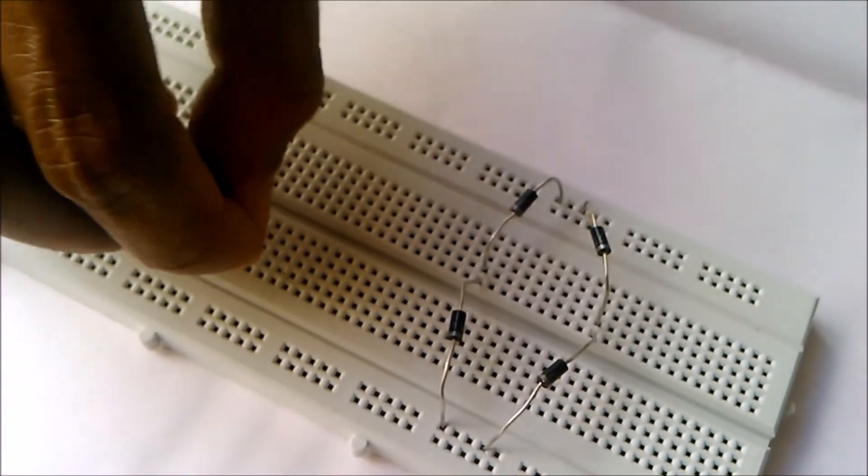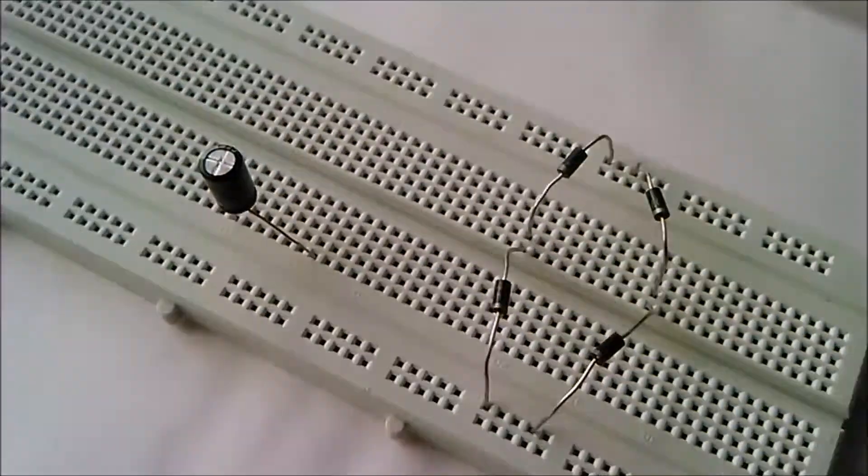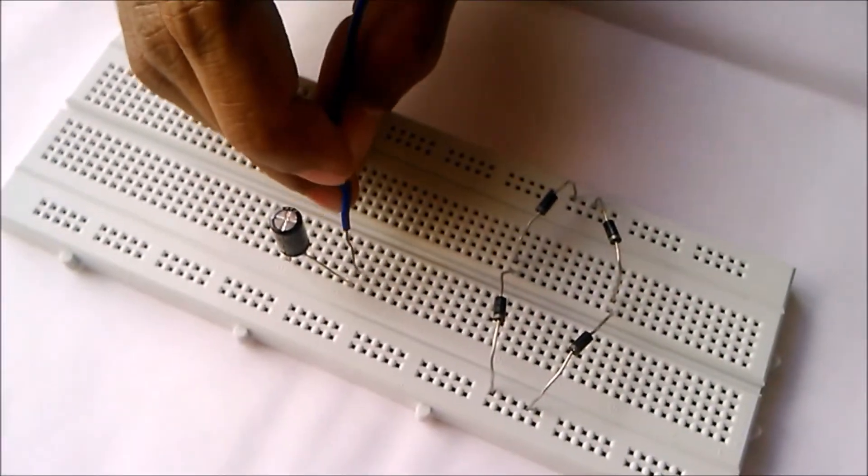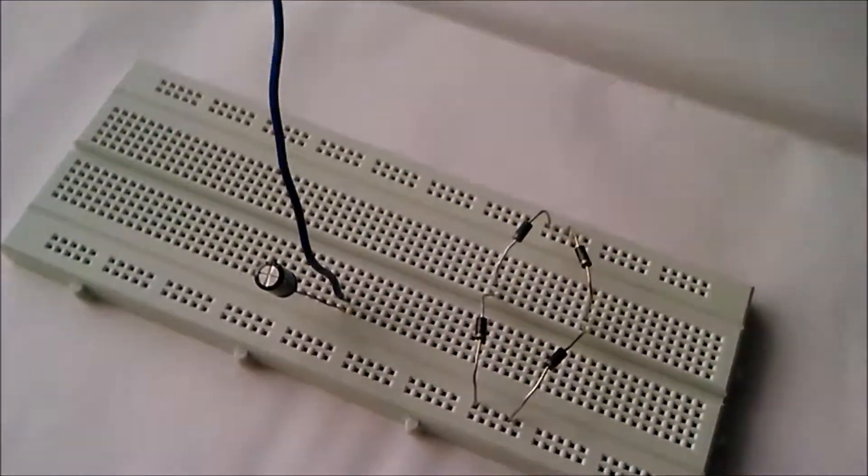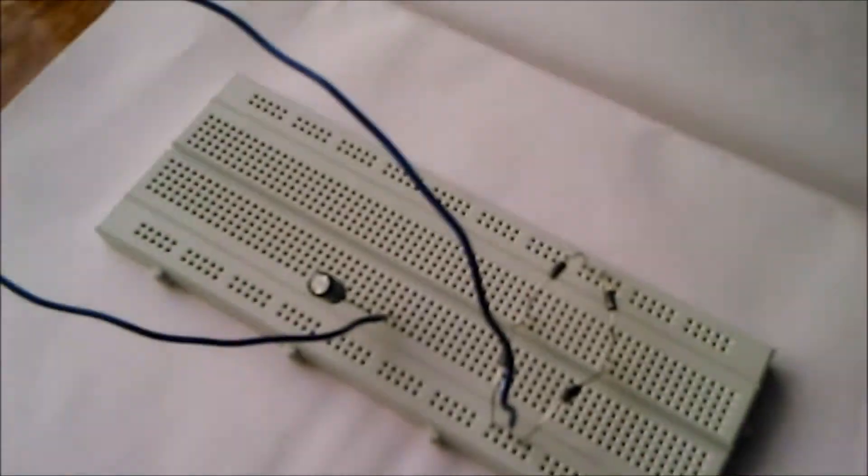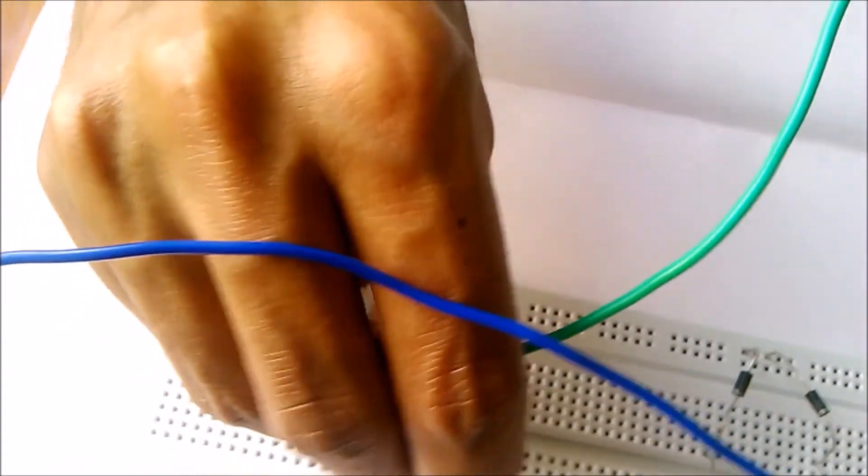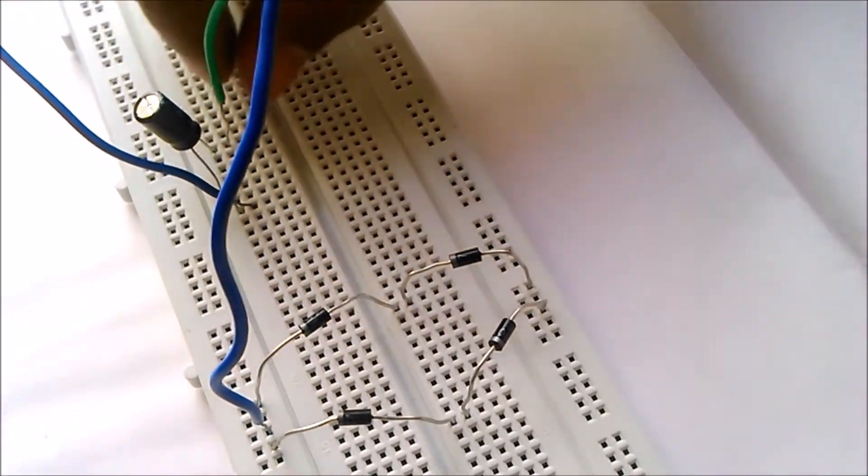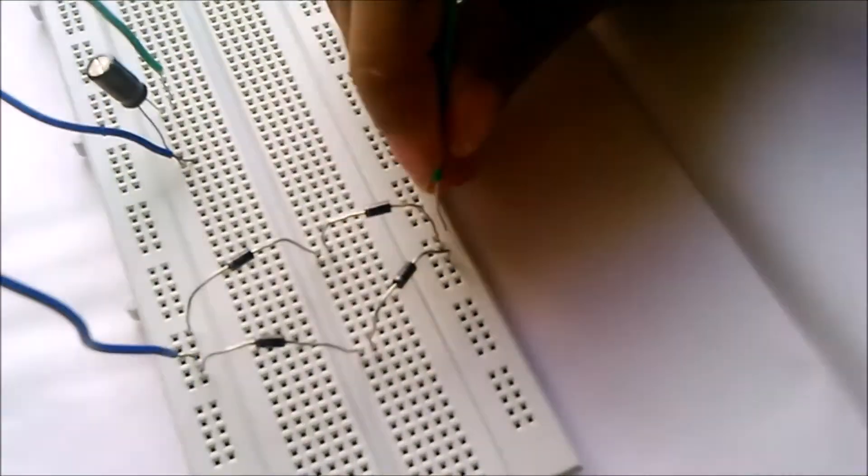Now, place the capacitor on the breadboard and connect the positive terminal of the capacitor to junction 2 and negative terminal of the capacitor to junction 4.